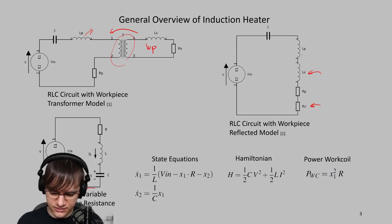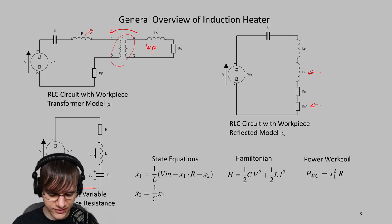So we have a variable. I've just lumped everything together into one lumped parameter model, where the inductor varies and the resistance varies based on the workpiece inside of the work coil.